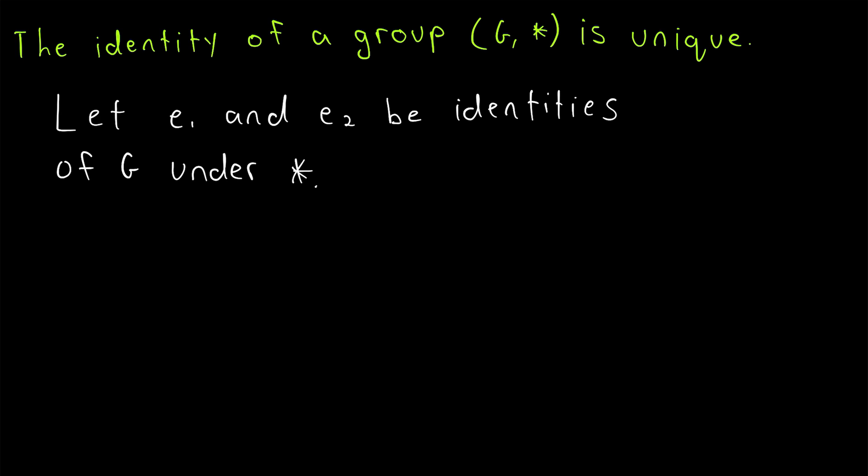By definition of identity element, what do we know about how e₁ and e₂ combine with each other? Well certainly, e₁ star e₂ must be equal to e₂ by definition of identity. Since e₁ is an identity, if we combine it with e₂, it leaves e₂ unchanged.